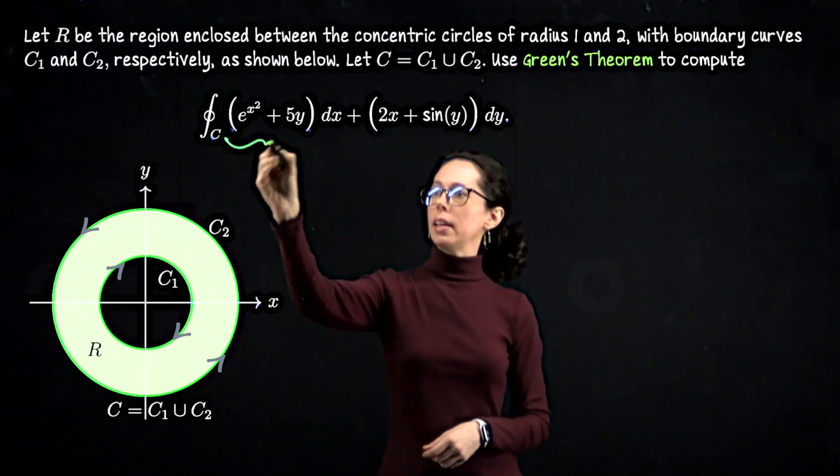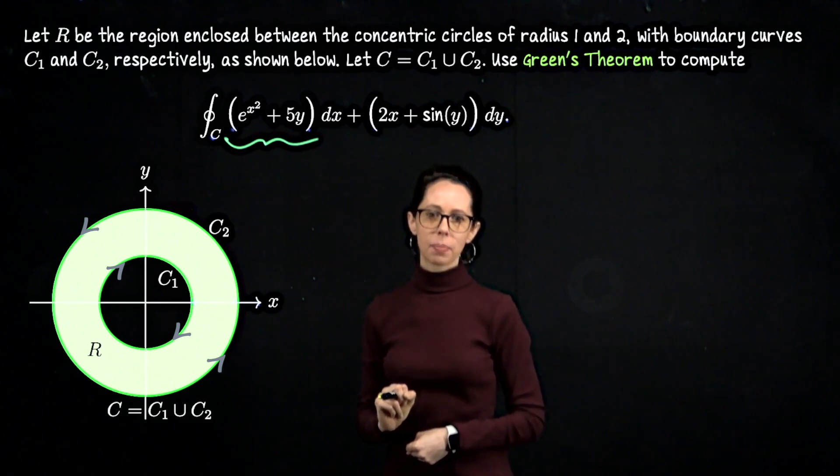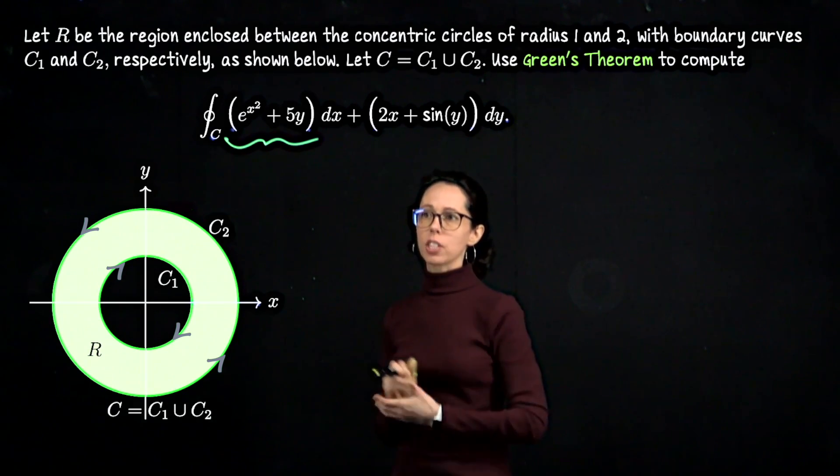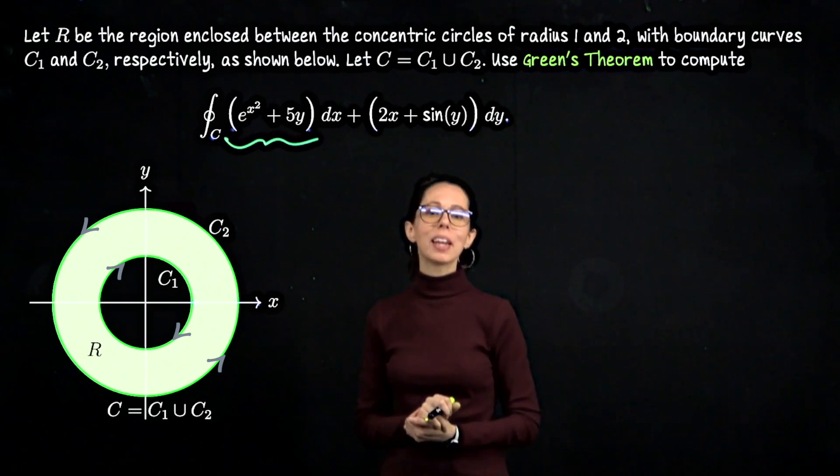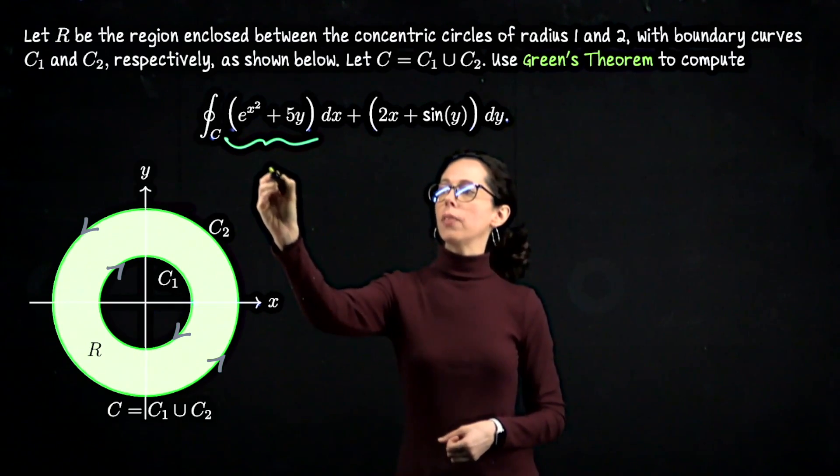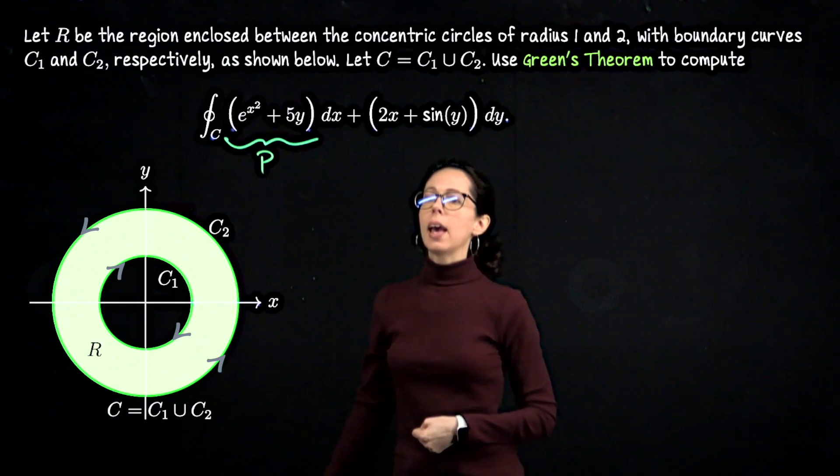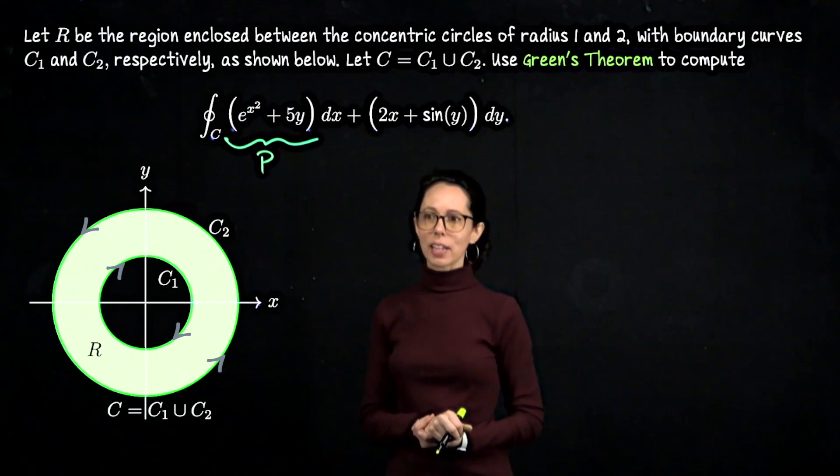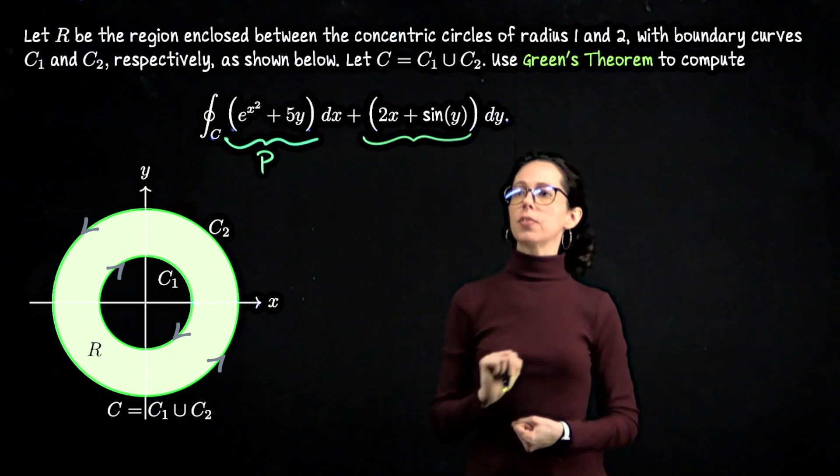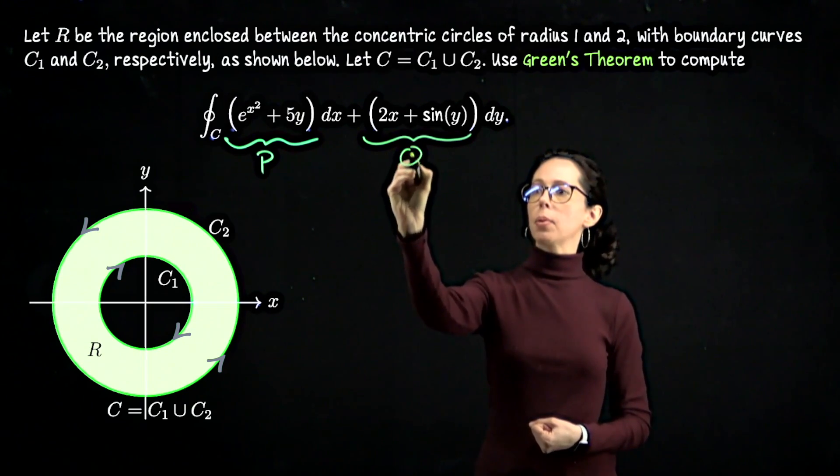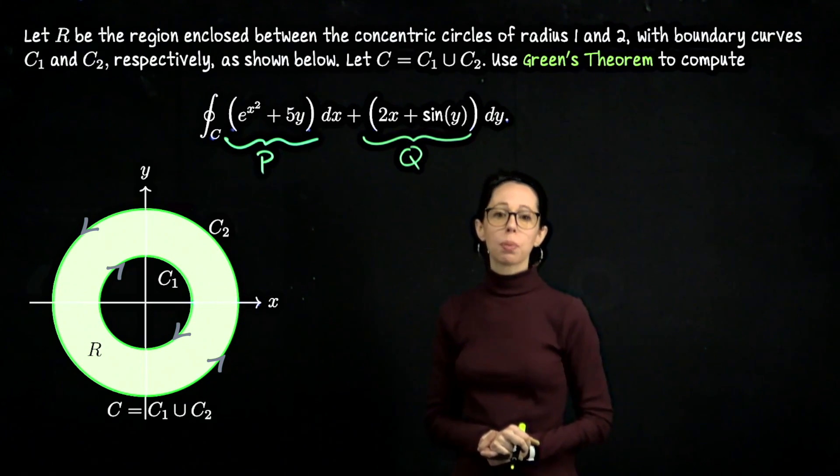So what we have here is an expression dx. We want to think of that expression that I've just underlined as the first component of our vector field, which I'll name in a minute f. So this is something that we often call capital P, and in this particular case we're looking at e to the x squared plus 5y. And then the second component for our vector field is found here. I'll name this capital Q, and this is 2x plus sine of y.